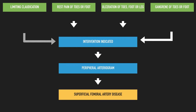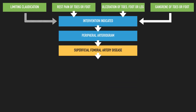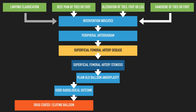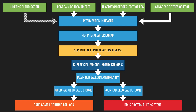If we have established that the patient does have superficial femoral artery disease, I follow the following approach. If the patient has evidence of a stenosis, I would always do a plain old balloon angioplasty first. This would indicate whether the patient had a good radiological outcome. In the event of a good radiological outcome, my first choice would be a drug-coated or drug-eluting balloon. If the plain old balloon angioplasty demonstrated a poor radiological outcome despite my best efforts, that would be an occasion for a drug-coated or drug-eluting stent.